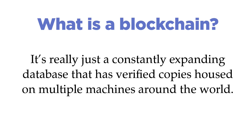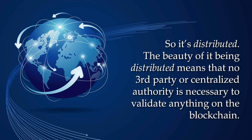Another way of explaining it is just as a constantly expanding database that has various verified copies housed on multiple machines around the world. This database can store value, transactions, who owns what value, and just about anything. These units of value can be programmed just like any other computer program to do various things. And as I said, it's distributed — think like cloud computing or peer-to-peer computing — so there are various copies of this blockchain all around the world on different computers.